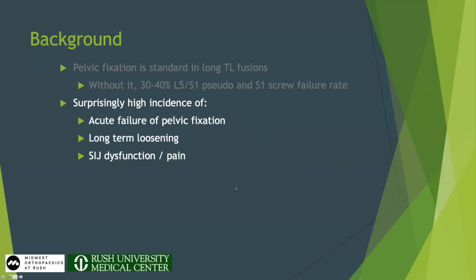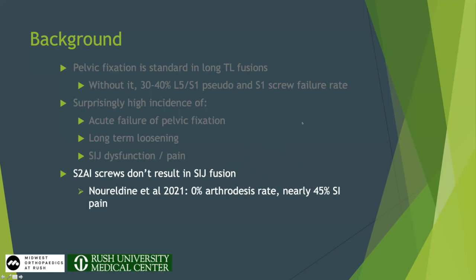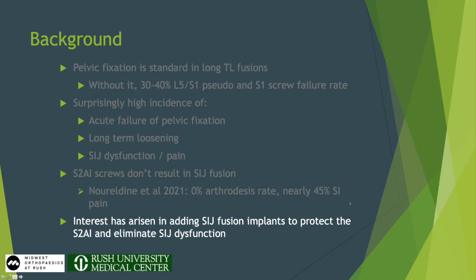These screws do loosen and cause SI joint dysfunction. Furthermore, S2AI screws do cross the SI joint but do not result in SI joint fusion. One recent study showed a 0% arthrodesis rate, accompanied by 45% SI joint pain. So there's interest in adding fusion devices to S2AI screws to protect them and prevent pelvic screw failure. If we could get the SI joint to fuse, maybe we eliminate a lot of that SI joint dysfunction in deformity. The incidence of SI joint dysfunction is reported at 10 to 33% in most recent studies.